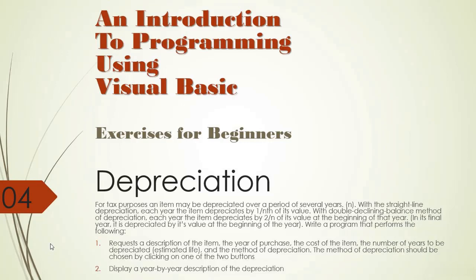We are to write a program that performs the following: requests a description of the item, the year of purchase, the cost of the item, the number of years to be depreciated or estimated life, and the method of depreciation. The method of depreciation should be chosen by clicking on one of two buttons. Second, we are to display a year-by-year description of the depreciation — a table that will have every year and the value of depreciation for that year listed in a list box.